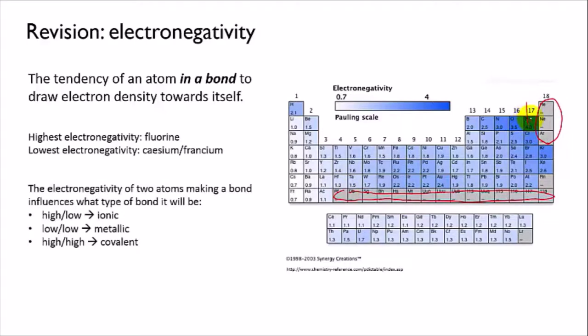So, fluorine is the element that has the highest electronegativity, and down the bottom left, cesium and francium are the elements with the lowest electronegativity. And the trend in general is that the electronegativity increases as you go across a period, and decreases as you go down a group.